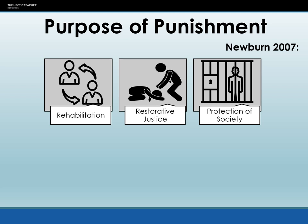Protection of society is particularly to do with incarceration — taking offenders out of society for the protection of that society. We're really talking about more serious crimes here: identifying people who are a danger to society and removing them from it. The main way we do this is through incarceration and sending people to prison. In the US they also have the death penalty as a form of protection, but we don't have that in the UK — there is no crime that still allows for the death penalty, not even treason.